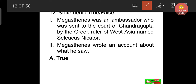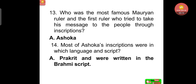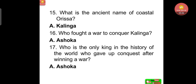Megasthenes is very important — a question can come here. Who was the ambassador sent to the court of Chandragupta by the Greek ruler of West Asia? Seleucus Nikator sent Megasthenes as ambassador to Chandragupta Maurya to write an account of what he saw in their empire. Who was the most famous Mauryan ruler and the first ruler who tried to take his message to the people through inscriptions? That was the great Ashoka. Most of Ashoka's inscriptions were in Prakrit language and written in the Brahmi script — a very important question. What is the ancient name of coastal Odisha? That was Kalinga. Who fought a war to conquer Kalinga? That was Ashoka.